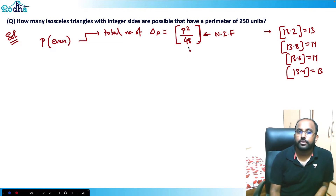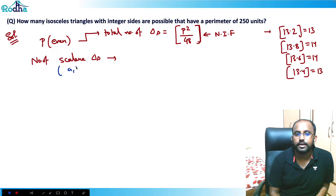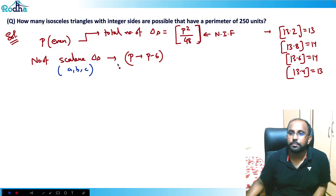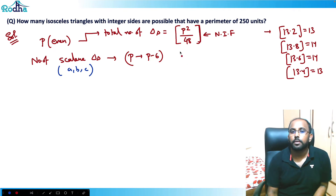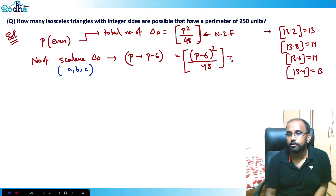If I want to find the number of scalene triangles — where all sides are unequal, meaning a, b, c are three different sides — just replace p with p minus 6 in the formula. So the number of scalene triangles becomes ⌊(p−6)²/48⌋, again using the nearest integer function.